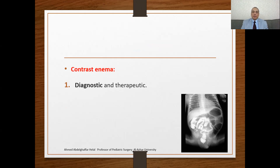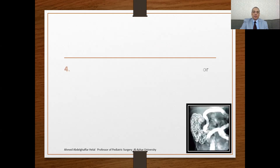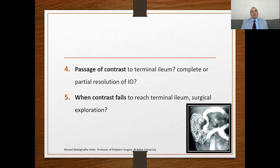Contrast enema is very important — both diagnostic and therapeutic. It must be performed under fluoroscopy to avoid iatrogenic perforation of the rectum or colon. We will find what is called microcolon of disuse. During the test, if the contrast passes past this meconium and reaches the terminal ileum, there may be complete or partial resolution of intestinal obstruction. However, when the contrast fails to reach the terminal ileum, surgical intervention is usually needed.